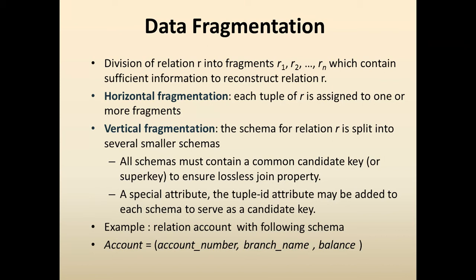Data fragmentation means distributing things into various divisions. A relation R is divided into fragments R1, R2, ..., Rn, which contain sufficient information to reconstruct relation R. There are two types of fragmentation: horizontal and vertical. In horizontal fragmentation, each tuple of R is assigned to one or more fragments. In vertical fragmentation, the schema for relation R is split into several smaller schemas, and all schemas must contain a common candidate key to ensure the lossless-join property. A special tuple-ID attribute may be added to each schema to serve as a candidate key.